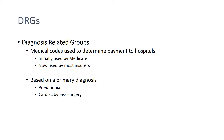Then, think about the DRGs, or diagnosis-related groups. These are medical codes used to determine the payment to hospitals. They were initially used by Medicare and are now used by most insurers. They're based on a primary diagnosis, such as pneumonia or cardiac bypass surgery.